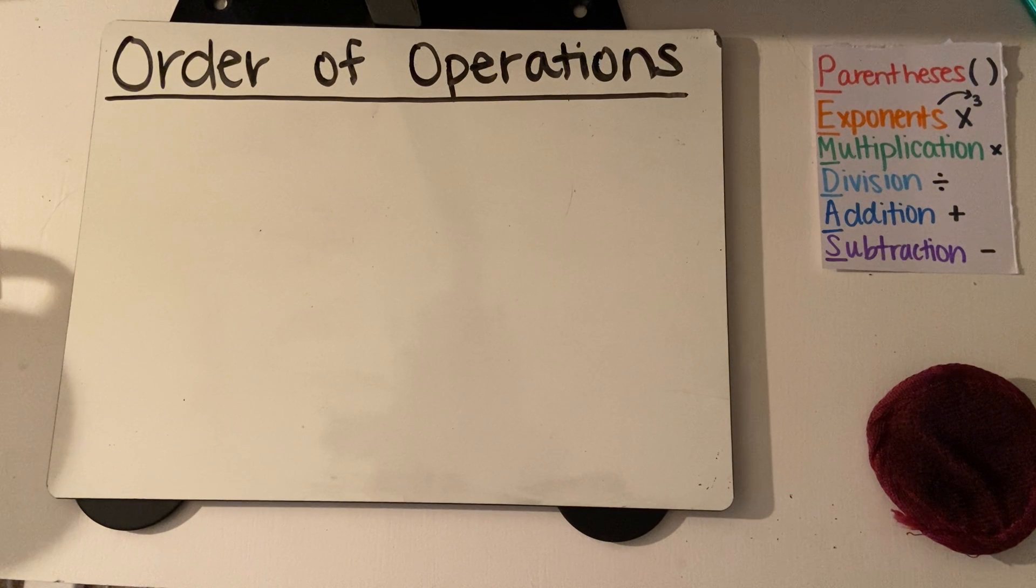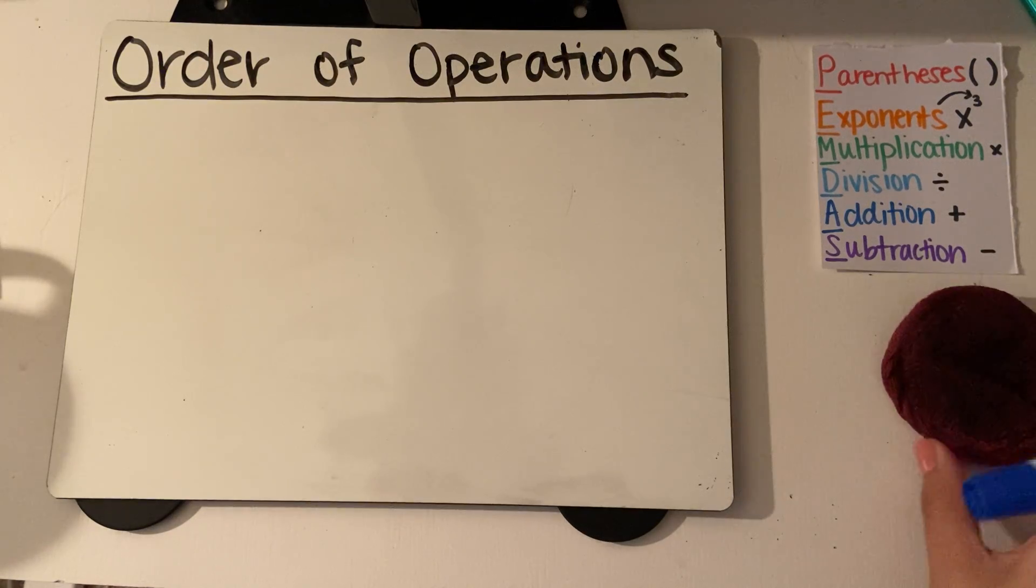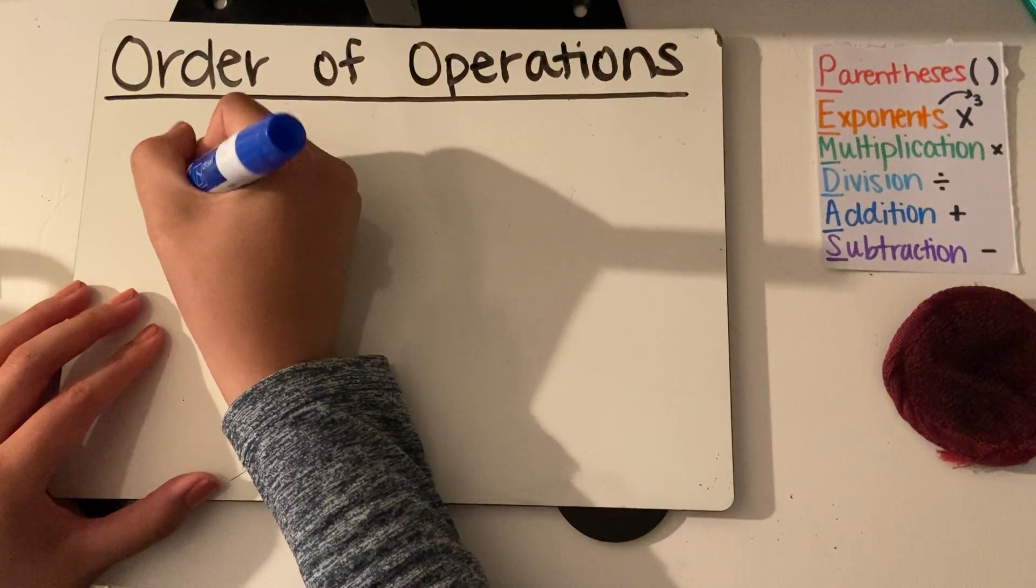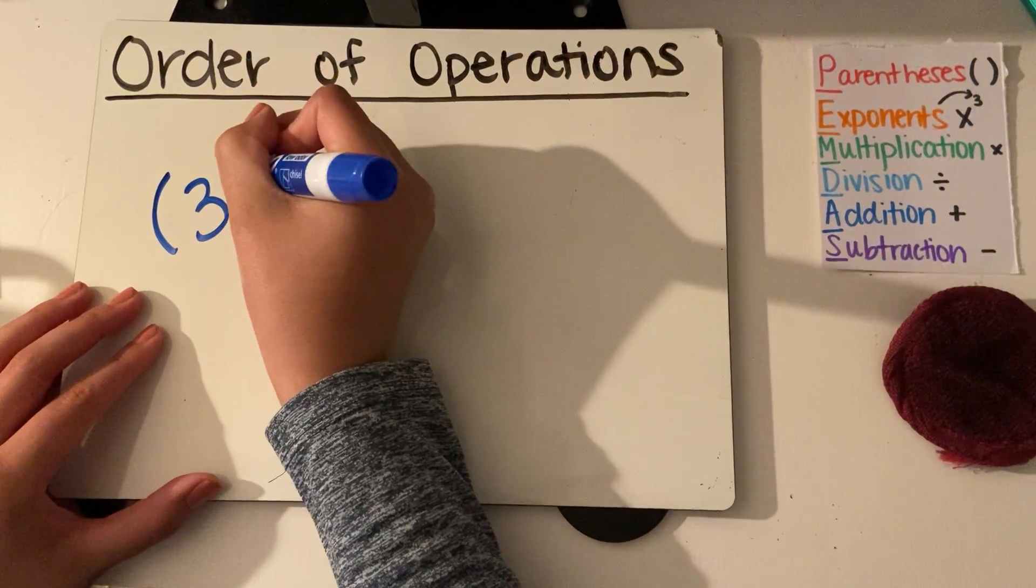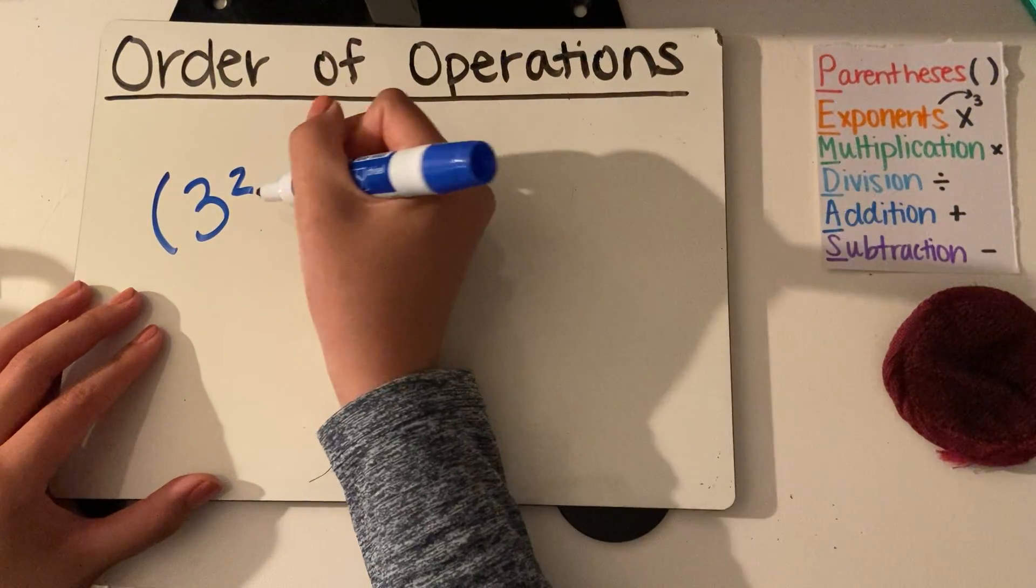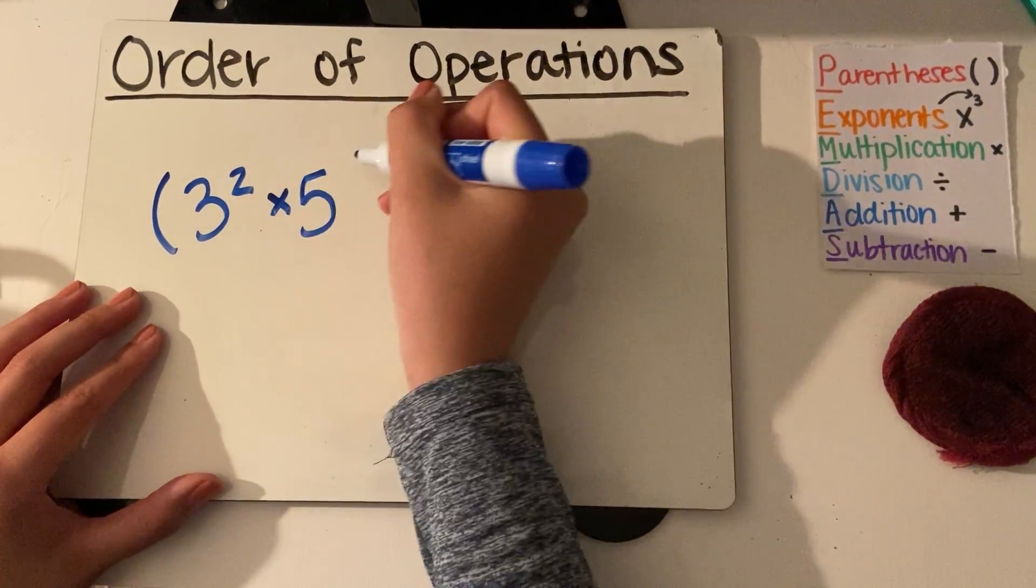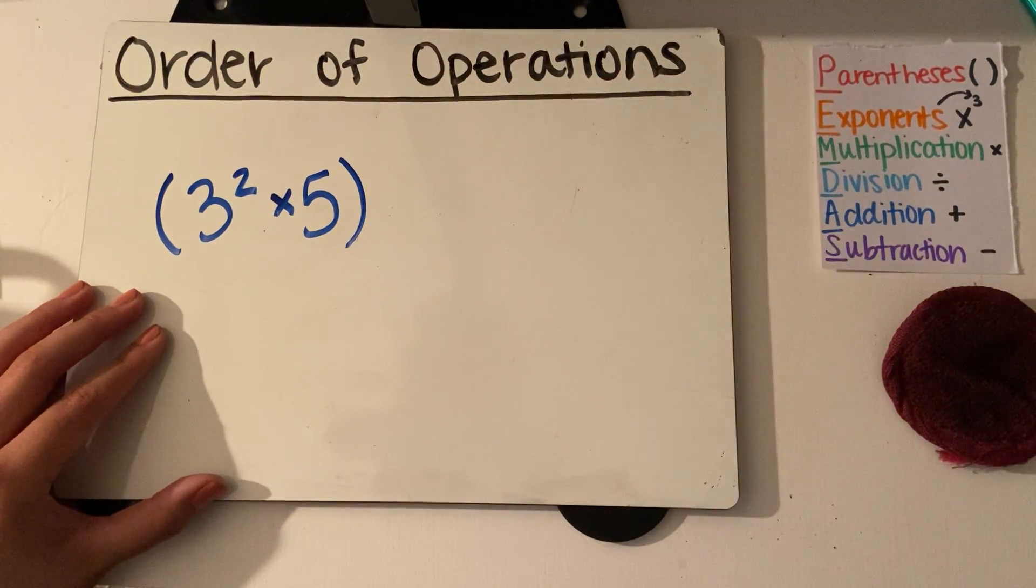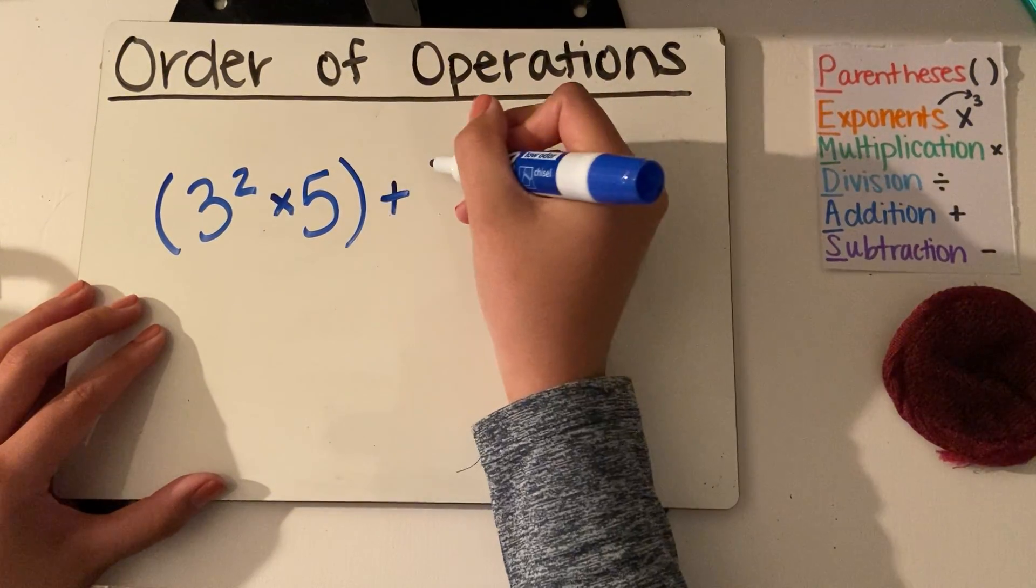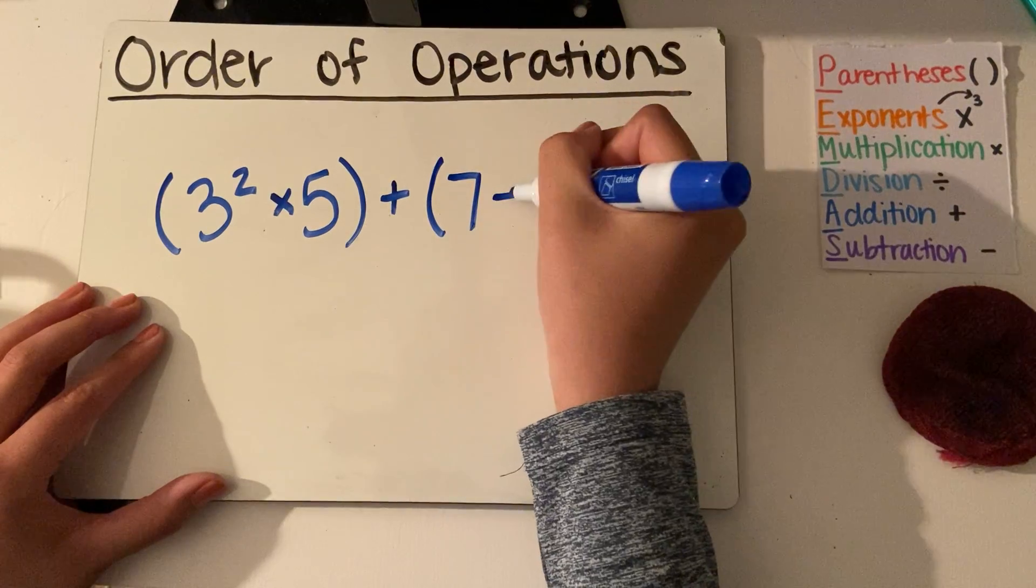So we focused a lot on parentheses on Monday and Tuesday, and that's going to come into play in these problems as well. So our first example problem is going to be 3 squared times 5, notice that these are in parentheses, plus parentheses 7 minus 2.